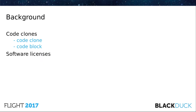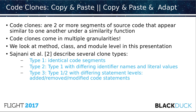Now we're going to go into some background on code clones. You can think of these as copy and paste and copy, paste, and adapt. Code clones are two bits of code that appear similar to each other under some idea of similarity. Furthermore, code clones can come in multiple granularities — they can be small or big, a couple of lines or entire classes. What we do is look at the method, class, and module level in this presentation.